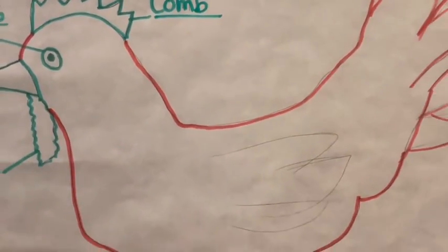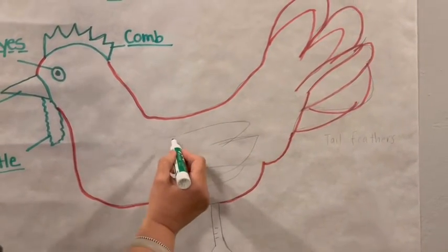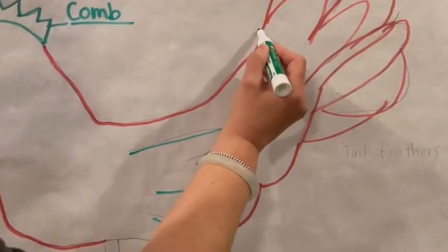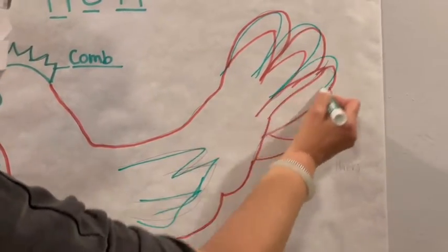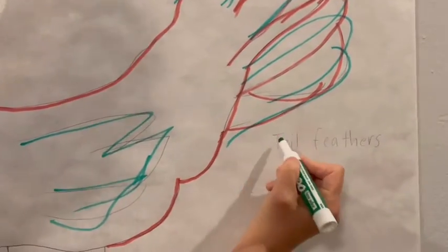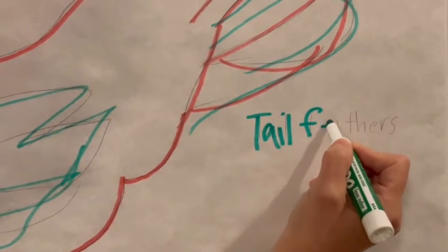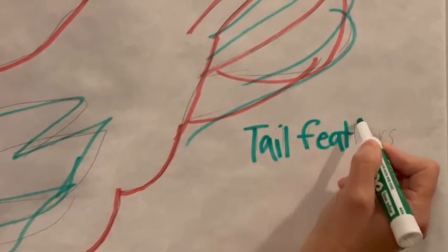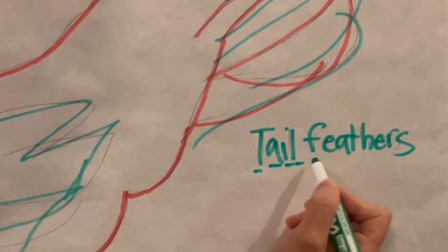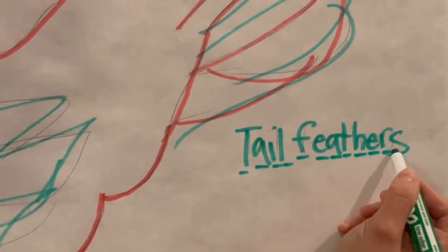What else does a chicken have? A chicken has this body, and they have lots and lots of feathers. And over here, this is called their tail feathers. T-A-I-L-F-E-A-T-H-E-R-S.